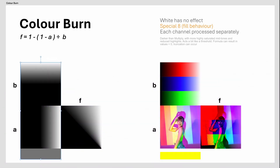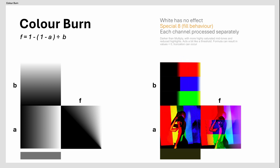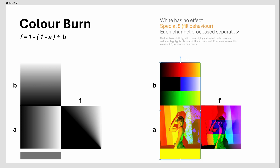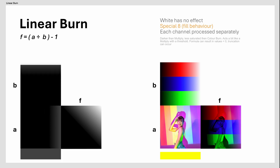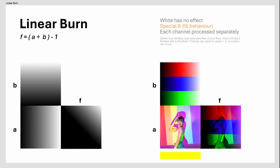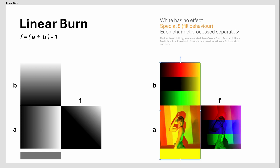The Color Burn Blend Mode is darker than Multiply, with more highly saturated midtones and reduced highlights. Acts a bit like a threshold — truncation can occur as the calculation can result in values less than zero. Linear Burn is darker than Multiply, less saturated and more gradual than Color Burn. Acts a bit like Multiply with a dark threshold. Ideal when you want a stronger, darker effect on the shadows and midtones.